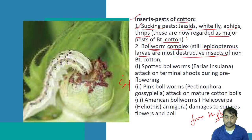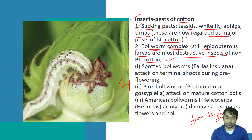These are the most damaging insects for non-Bt cotton. If you are growing non-Bt cotton, you will face very severe problems with boll worm, which will damage your boll, square, and flower. Here you can see the spotted boll worm, which is caused by Earias insulana, and it attacks the terminal shoot during the pre-flowering stage.